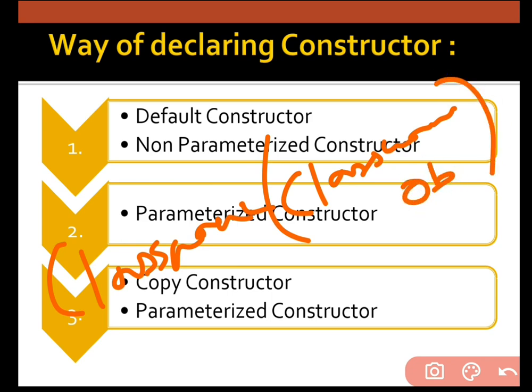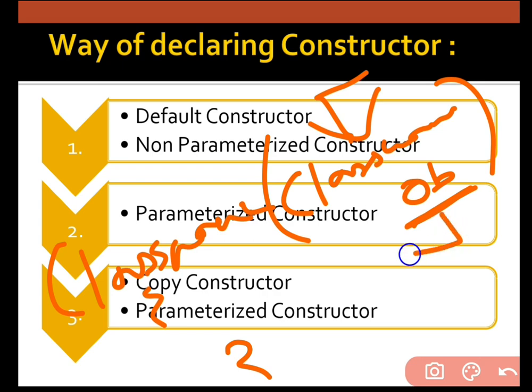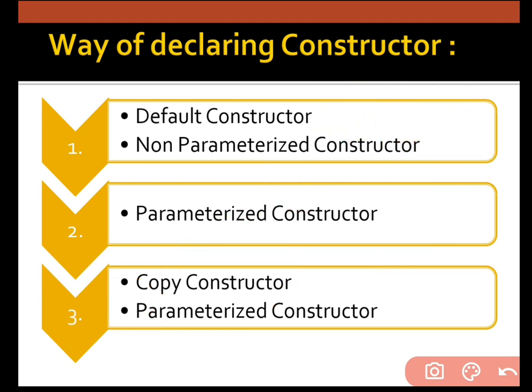By sending an object, I can create a copy of a given object. I will explain how in the next video with programs. Presently, just understand that we can share with the constructor by sending a class object, and we can have a copy of that object — that's why we call it a copy constructor. It basically belongs to parameterized constructors only.